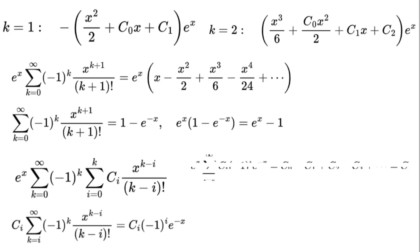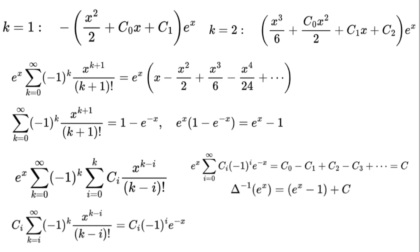Summing over all i: e to the power of x times the sum from i equals 0 to infinity of cᵢ times negative 1 to the power of i times e to the power of negative x equals c₀ minus c₁ plus c₂ minus c₃, and so on, equals c. Combining everything: delta to the power of negative 1 times e to the power of x equals e to the power of x minus 1 plus c.